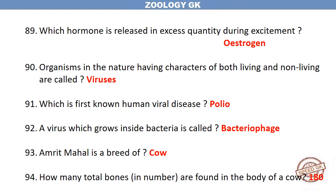The full form of the infectious disease SARS is Severe Acute Respiratory Syndrome. Which hormone is released in excess quantity during excitement? Estrogen. Organisms in nature having characters of both living and non-living are called viruses. Which is the first known human viral disease? Polio.